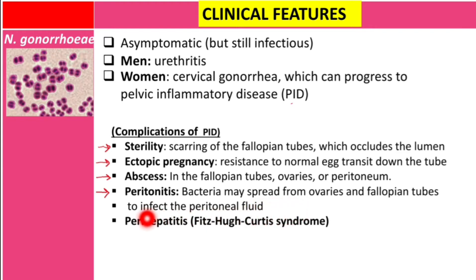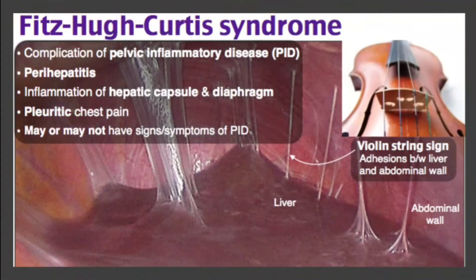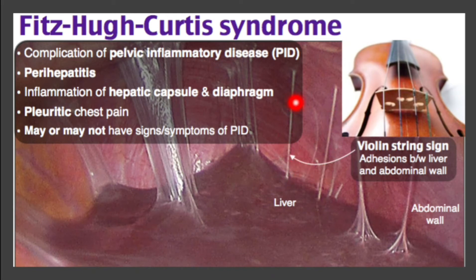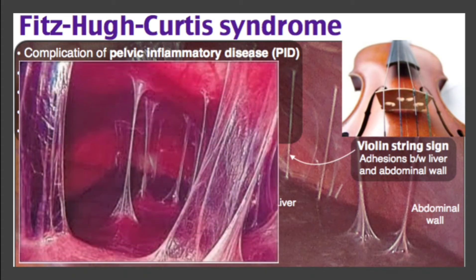Another complication of PID is perihepatitis, known as Fitz-Hugh-Curtis syndrome. There is inflammation of the hepatic capsule and diaphragm. Because the liver is surrounded by Glisson's capsule, there will be a kind of adhesion between the diaphragm and the liver, forming what look like violin strings. A symptom of this condition is pleuritic chest pain. The patient may or may not have signs of pelvic inflammatory disease. You can see the diaphragm, liver, and violin string sign on the image.